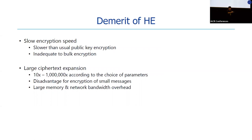Recent homomorphic encryption schemes have two demerits. The first one is slow encryption speed. Usually, homomorphic encryption schemes use super large parameters and LWE samples, so it is very slow compared to conventional symmetric ciphers. The second one is large ciphertext expansion. Ciphertext expansion refers to how much the ciphertext is expanded from its plaintext. Homomorphic ciphertext can be 10 times to a million times larger depending on the choice of parameters, causing large memory and network bandwidth overhead.